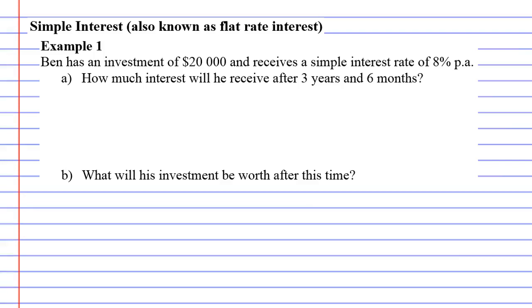All right, simple interest. We're going to do example one. This time Ben has invested $20,000, so this is an investment, not a loan, and he receives a simple interest rate of 8% per annum. Question A says: how much interest will he receive after three years and six months? So let's look at all our pronumerals.